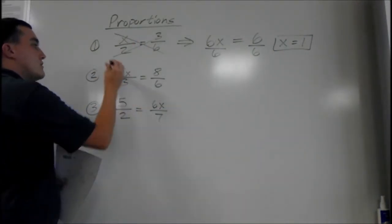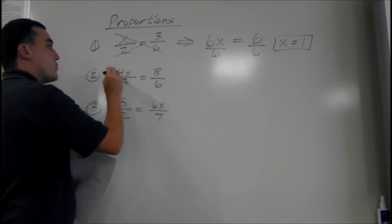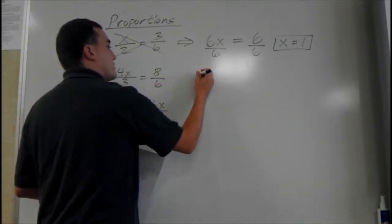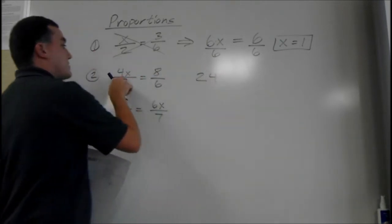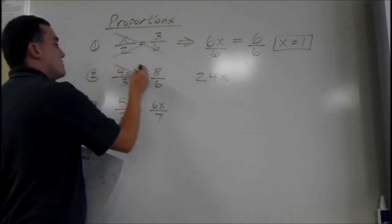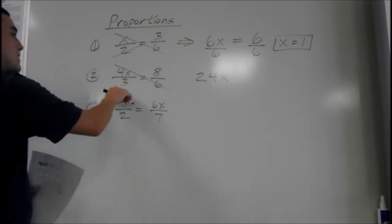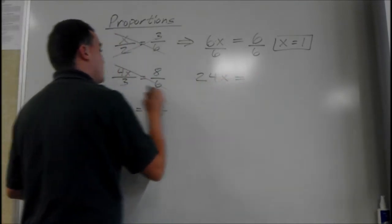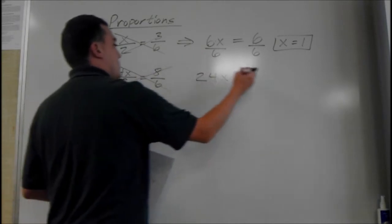Same thing here. 4x times 6 first. 4 times 6 is 24. So 4x times 6 is 24x. Done with that one. And we have 8 times 3. 8 times 3 is 24 as well.